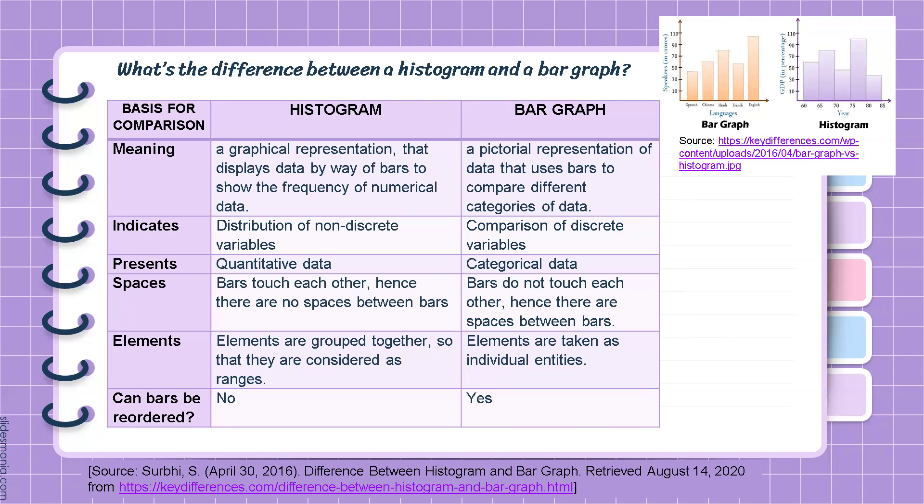Histogram indicates distribution of non-discrete variables, which are continuous variables or measurable values, and often includes fractions and decimals and can take any value within a range. For example, the weights of individuals, like 40.5 kilograms and 45.6 kilograms. On the other hand, bar graph indicates comparison of discrete variables, which are often countable distinct values like whole numbers. For example, the number of fruits in the baskets.